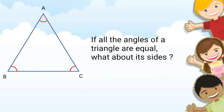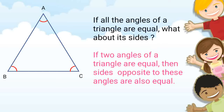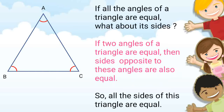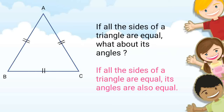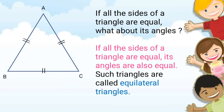If all angles of a triangle are equal, what about its sides? If two angles of a triangle are equal, then the sides opposite to these angles are also equal. So all the sides of this triangle are equal. If all sides of a triangle are equal, its angles are also equal. Such triangles are called equilateral triangles.